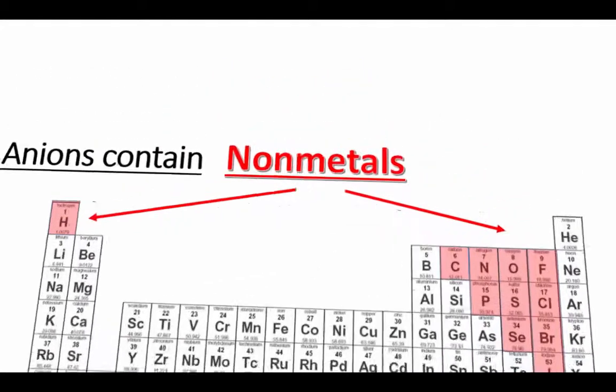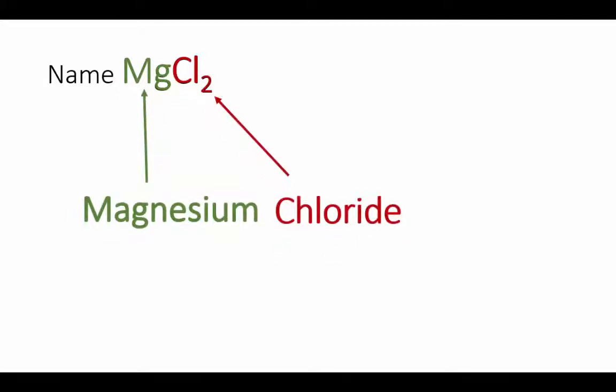Our first ionic compound has a group 2 metal, that's magnesium. And our non-metal ion is chloride. So the name is simply magnesium chloride.